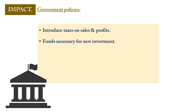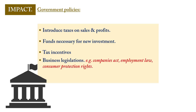If a government is prepared to invest in the economy and offer grants or create an enabling environment for businesses to thrive, it augurs well for business success. If the government grants tax incentives, it helps the business push its frontiers and make more progress. Business legislations such as the Companies Act, employment laws, and consumer protection rights are also likely to help or hinder business success, depending on how business-friendly these legislations are.